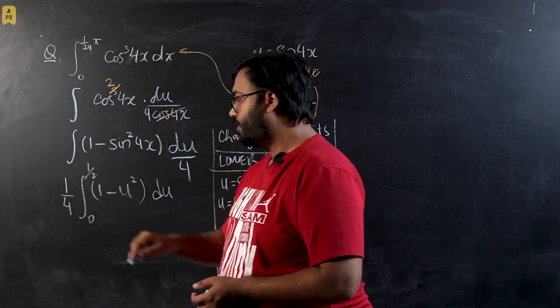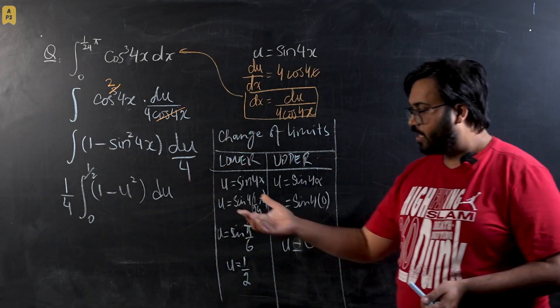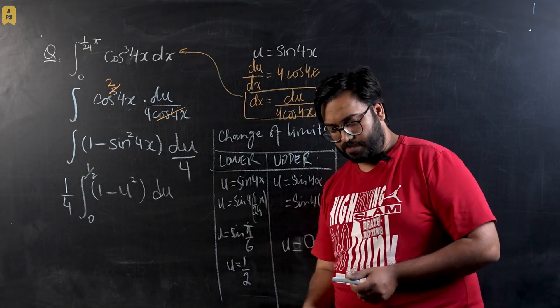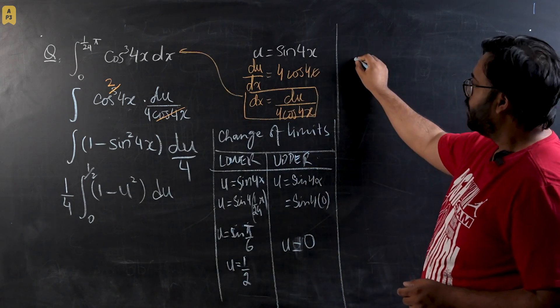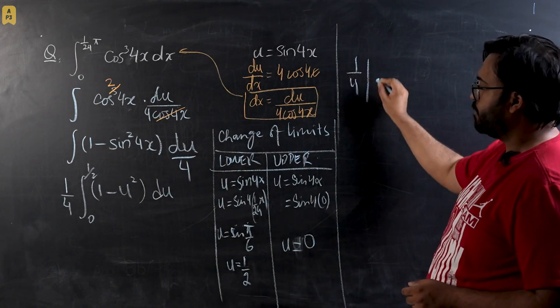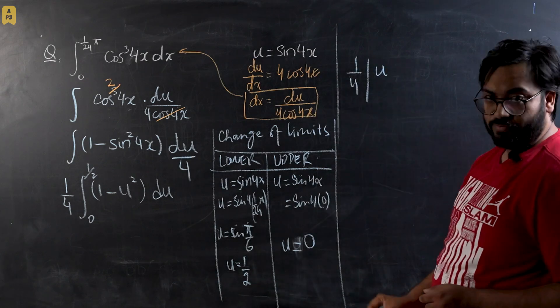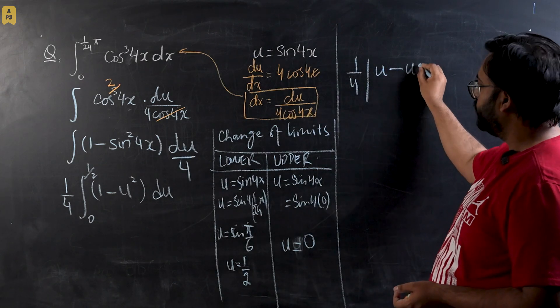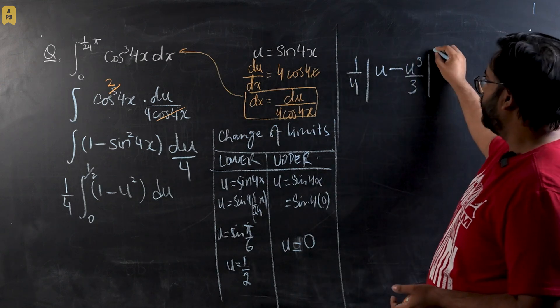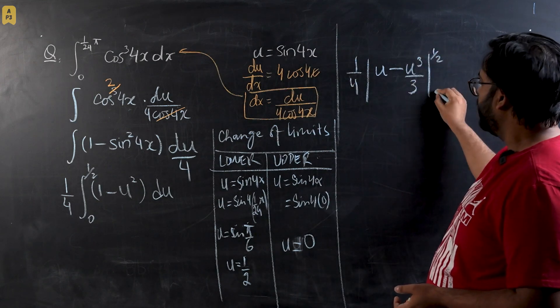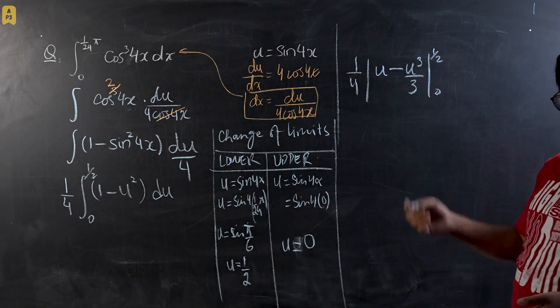Now it's going to be a very simple integration. You're just going to integrate the powers. And for the integral we will have 1/4 times 1 would be integrated to u and u² would be integrated to u³/3. And I'm going to apply the limit from 1/2 till 0.